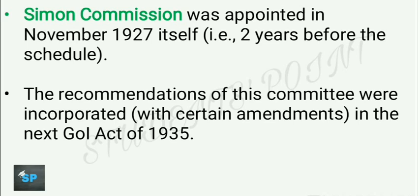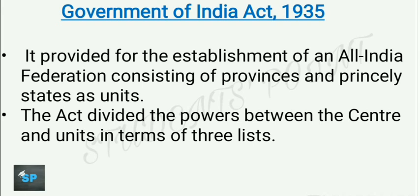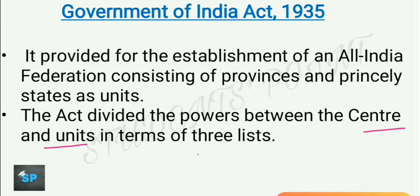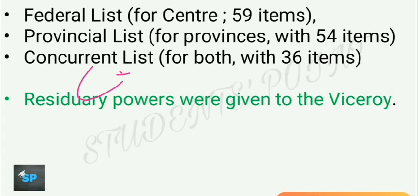Now we will see the provisions of the Government of India Act 1935. This act provided for the establishment of an All India Federation consisting of provinces and princely states as units. It divided powers between the center and units in terms of three lists: the Federal List, the Provincial List, and the Concurrent List. This concept was included in India for the first time by the Government of India Act 1935. The Federal List, exclusively for the center, had 59 items; the Provincial List had 54 items; and the Concurrent List had 36 items — covering subjects where both center and provinces could pass laws. Residual powers were left with the Viceroy.